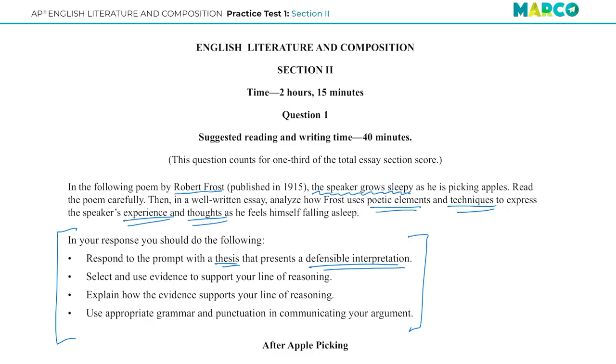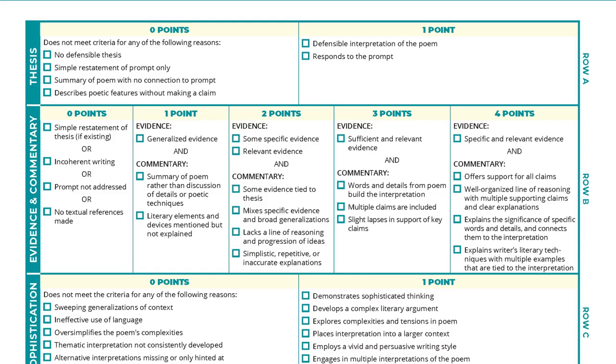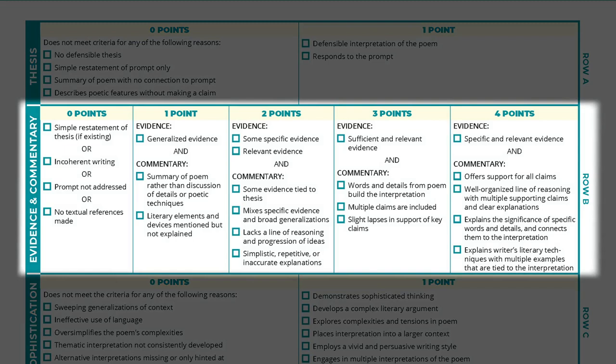Next, it says: select and use evidence to support your line of reasoning. I have to select evidence — quotes or descriptions from the passage — and then use that evidence. And then, crucially, explain how the evidence supports my line of reasoning. There are up to four points I can earn on the evidence row of the rubric after earning that point for a thesis. I can earn one or two if I just use some evidence, but I can earn the full four if I explain how that evidence supports my claim. So as I'm gathering evidence, I'm going to think of devices I can name and techniques that Frost uses, then think about how he's using them to accomplish the purpose.